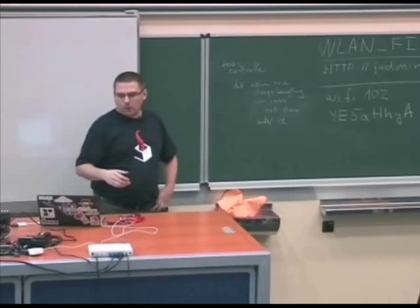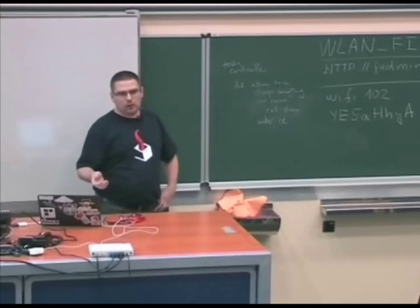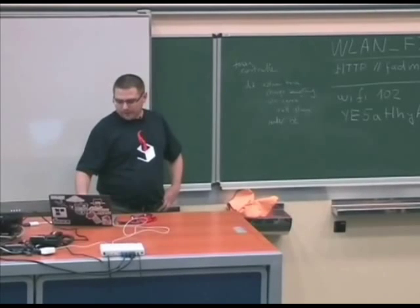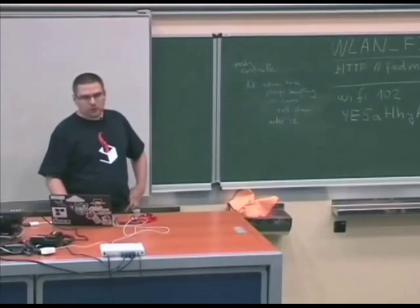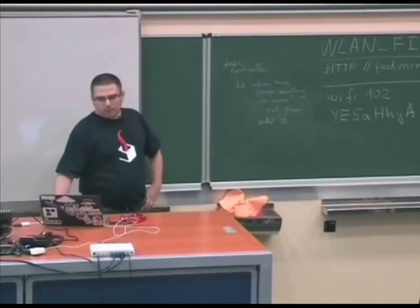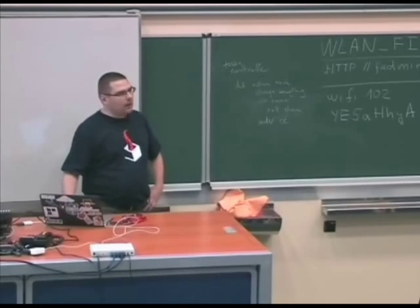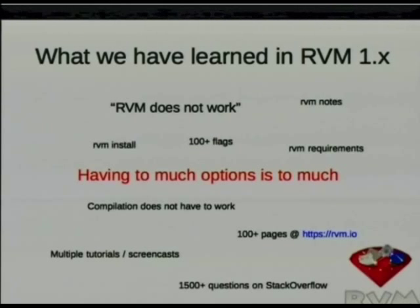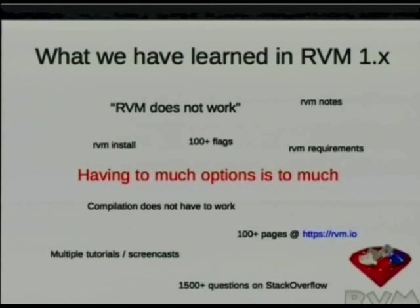Because of how RubyGems works, you need to uninstall the old version and install a new one, create a new gem set, and everything gets complicated. There is a lot of information you need to know if you go off the path or use some less-known systems. There are 100 flags for RVM install, so you can do a lot, but you have to get to know them. This information is described in RVM notes, but most users don't read it — though if you have problems, the answers are there.